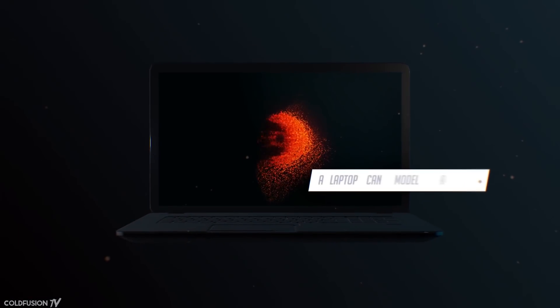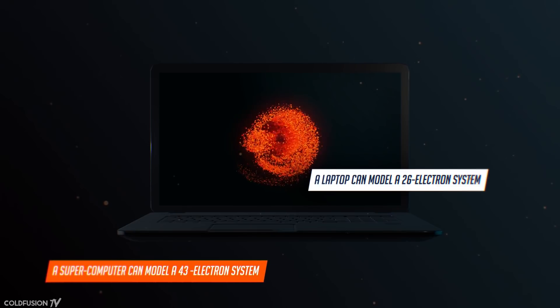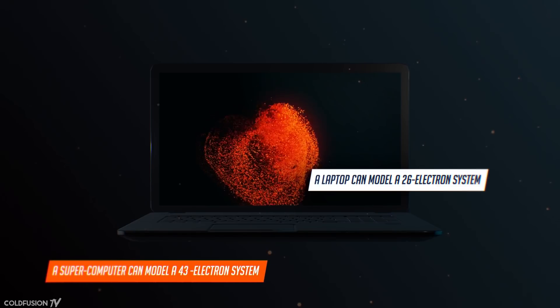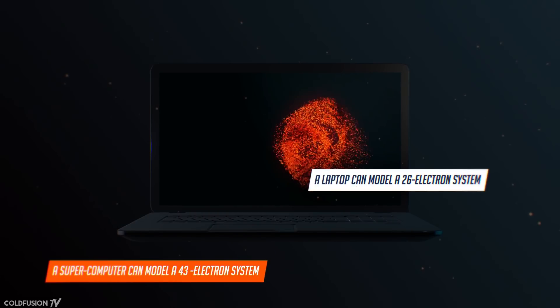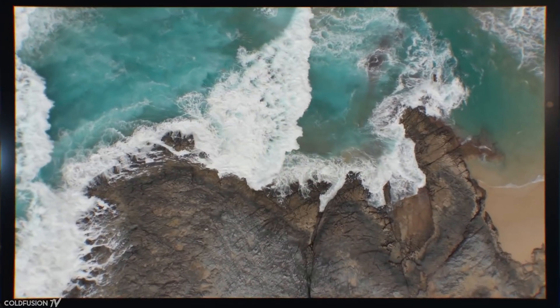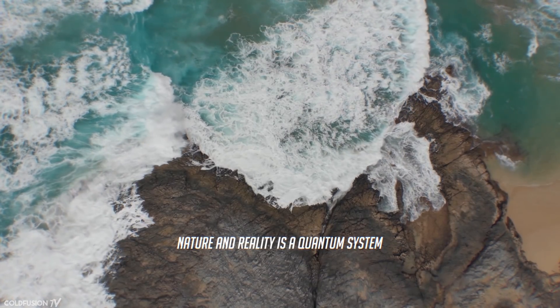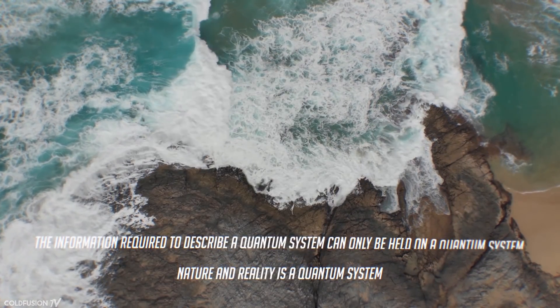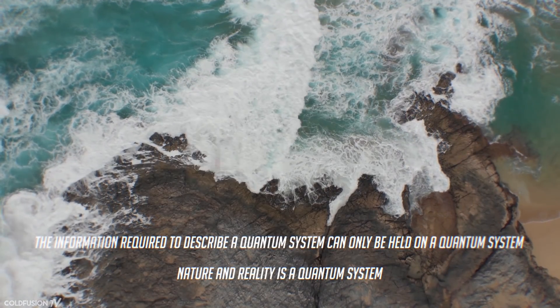Here's an example to put it all into context. A modern laptop can model 26 electrons, a supercomputer 43 electrons, but what about a 50 electron system? Well, forget it. That's impossible for any classical computer in the future, as far as humans will exist. Nature and reality itself is a quantum system, and it can't be modeled on a classical computer effectively. It all boils down to this. The information required to describe a quantum system can only be held by another quantum system.